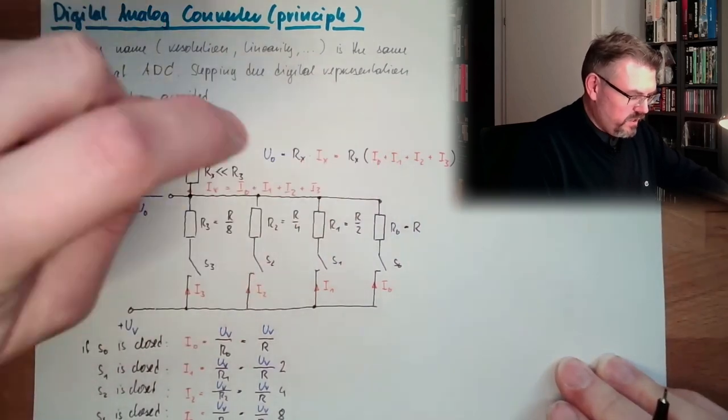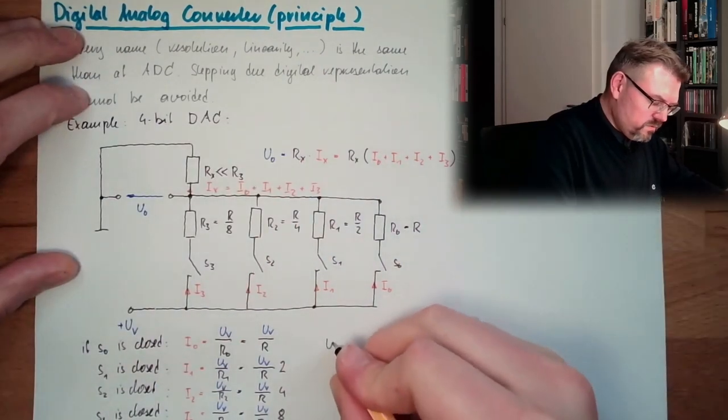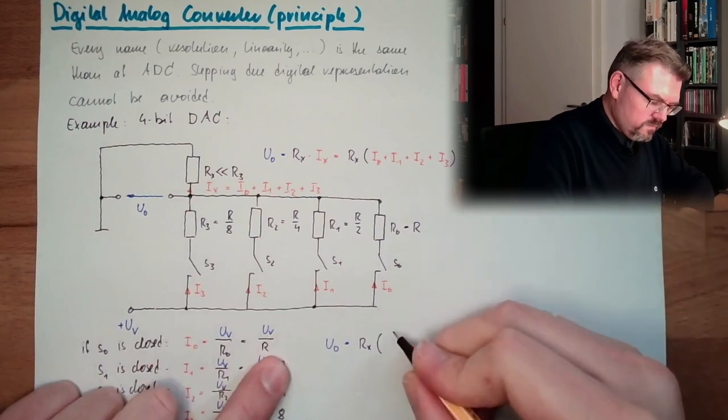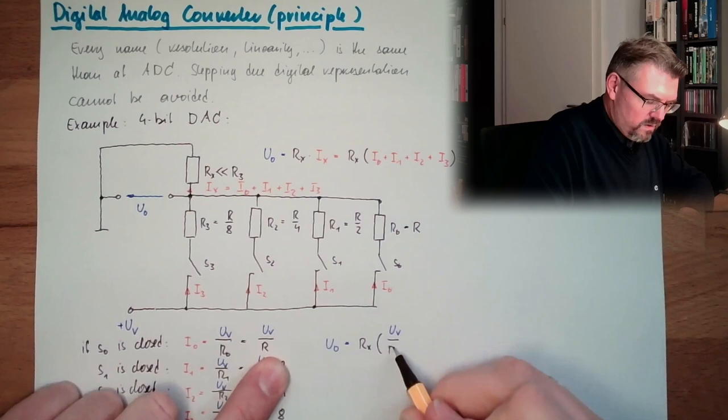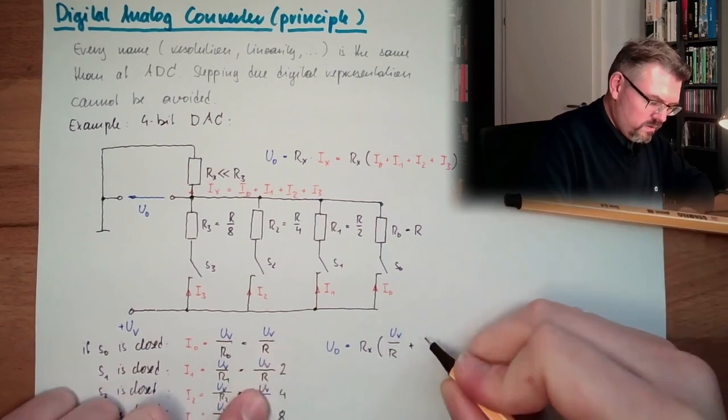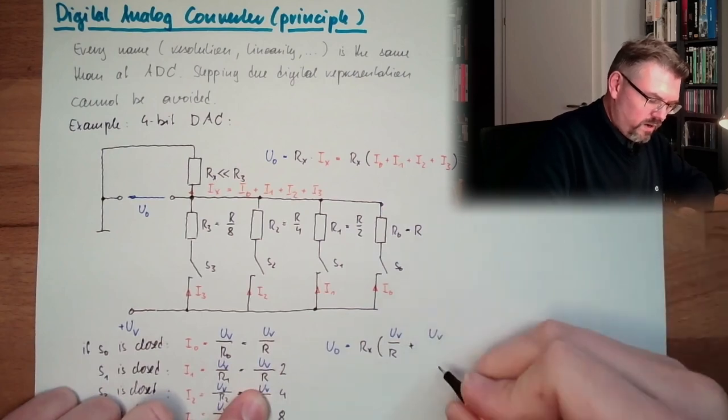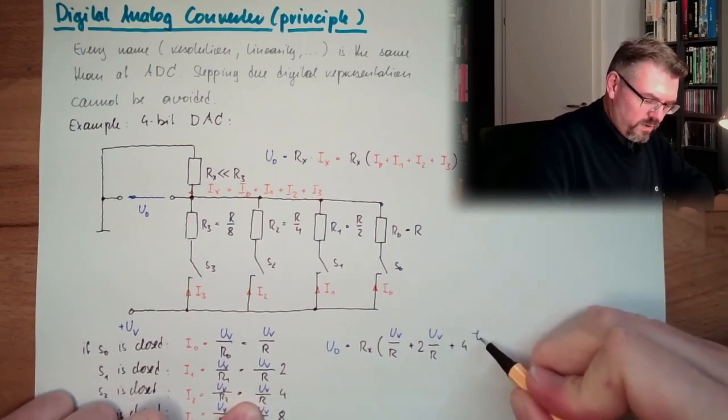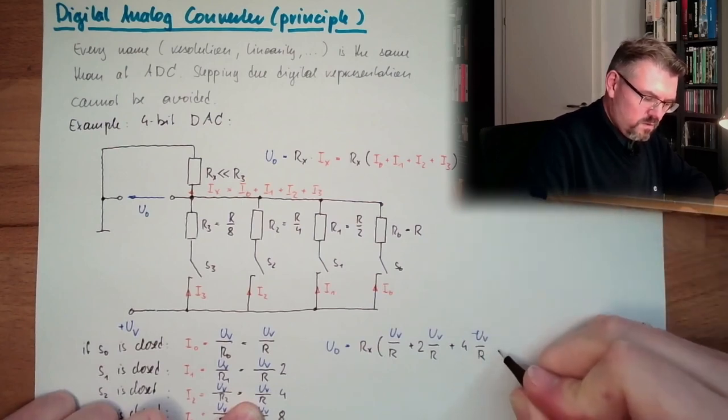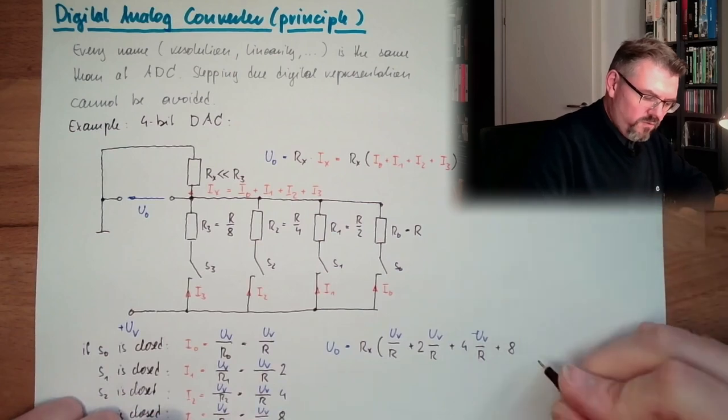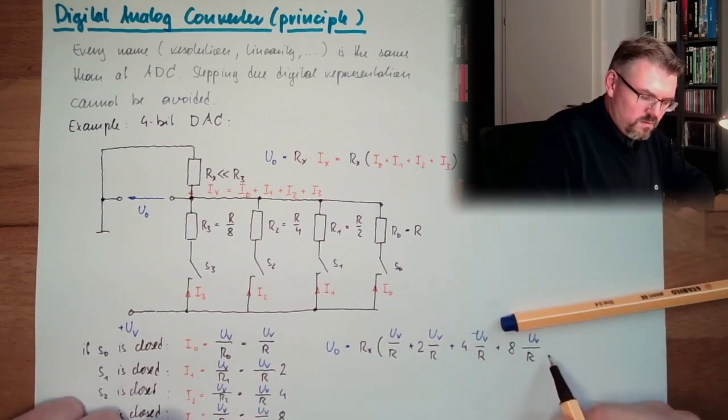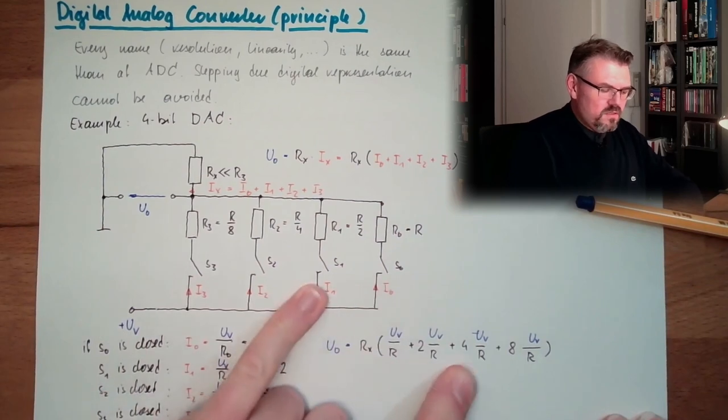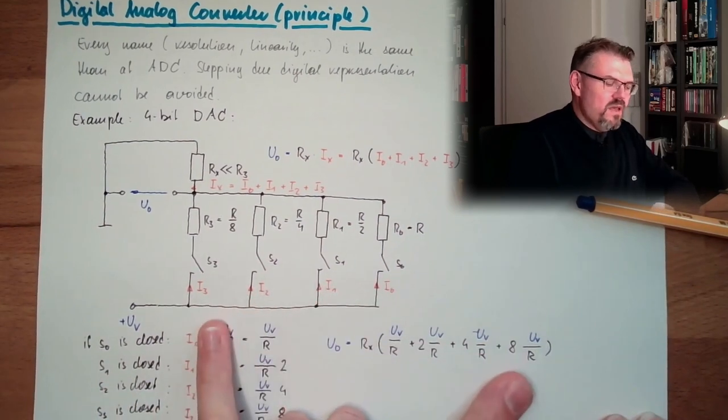And now let's take this equation here. This means U0 equals Rx. And now let's add this. UV divided by R plus UV divided by R two times. Plus four times UV divided by R. Plus eight times UV divided by R. This is only here if S0 is closed. This is only here if S1 is closed. This is only here if S2 is closed. And this is only here if S3 is closed.